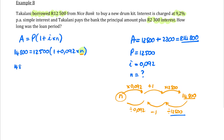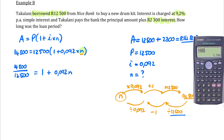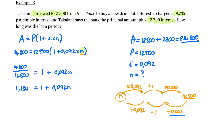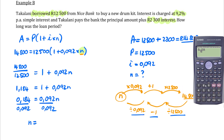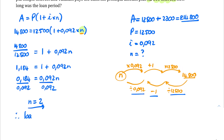Our first step is to divide both sides by 12,500, leaving us with one plus 0.092 times N. Simplifying 14,800 divided by 12,500 gives us 1.184. The second step is to subtract one from both sides, leaving 0.092 times N. Dividing both sides by 0.092 leaves just N. Taking 0.184 divided by 0.092, our calculator tells us that is 2 — therefore the loan was for two years.